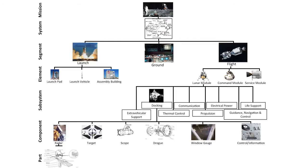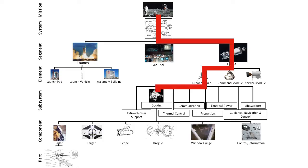All requirements need to be traceable, so these parents and children all need to be connected. No orphan requirements allowed. Every requirement at every level has to be able to show that in some way it helps meet a higher level requirement. The docking system helps meet a higher level requirement for the lunar module; the docking radar helps meet a higher level requirement for the docking system. Everything has to be hierarchically connected in a traceable way.